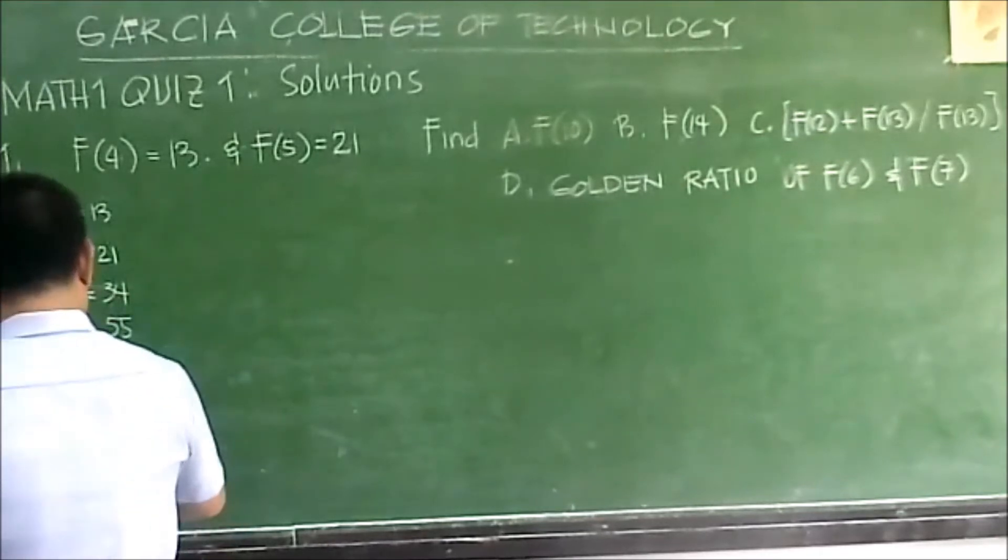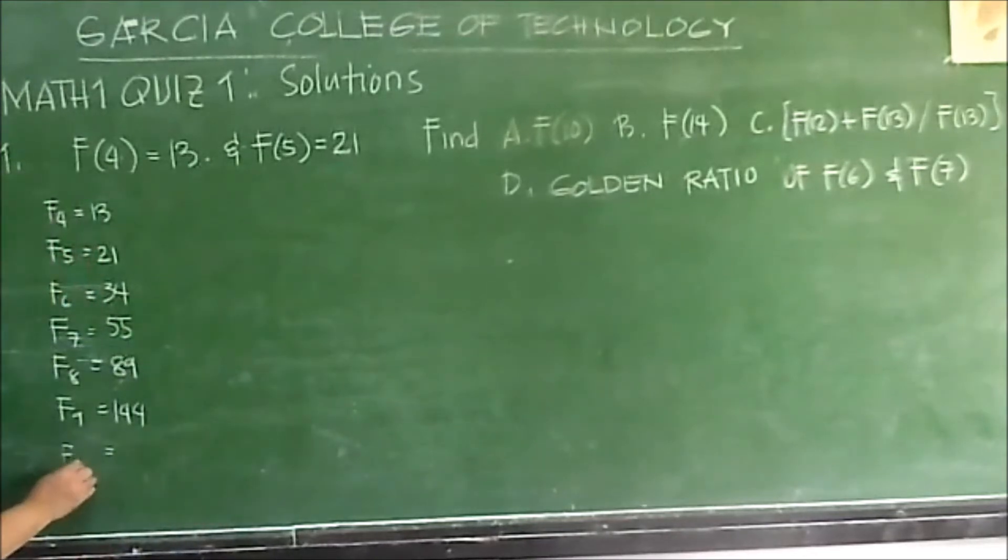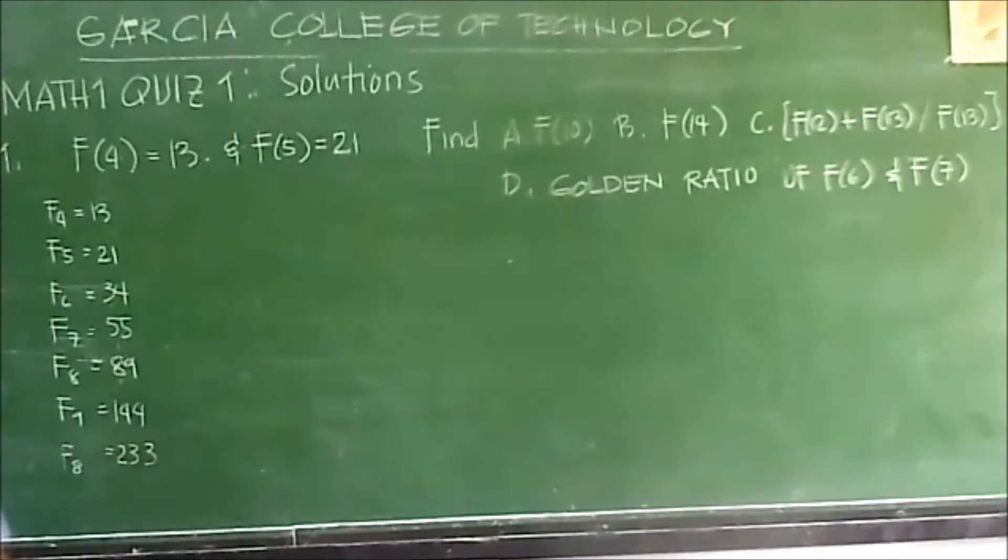Next, this is 144, F sub 9. The next F sub 10 equals to 233. This is F sub 10.